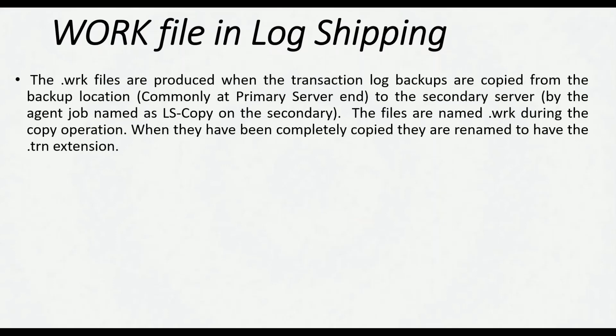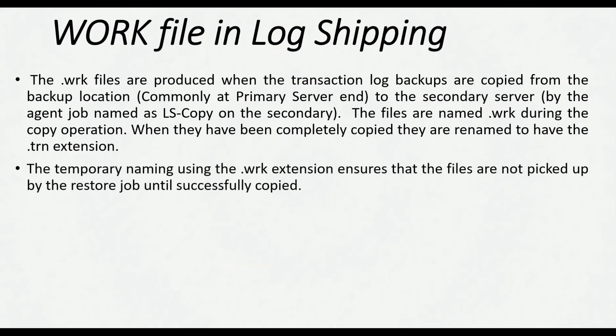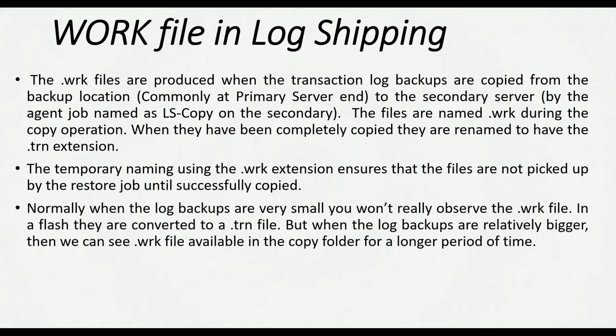When the copy job at the secondary server is executed, the log backups from the backup folder at the primary server are copied to the copy folder which is present at the secondary server. Until the copy job is executed successfully, these files will take the .wrk extension in the copy folder. This temporary naming using the .wrk extension ensures that the files are not picked up by the restore job until they are successfully copied.